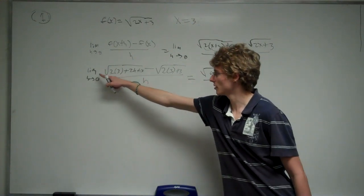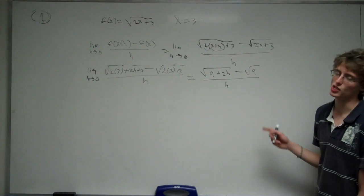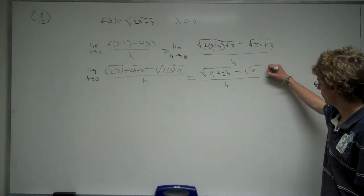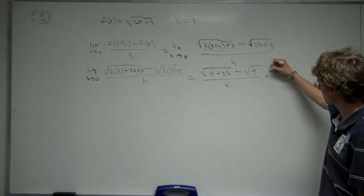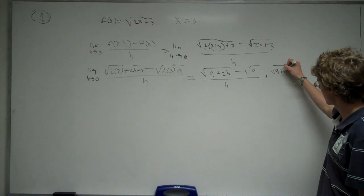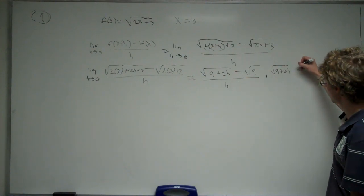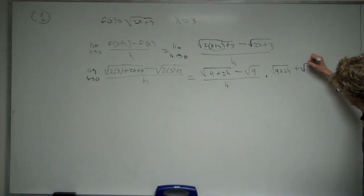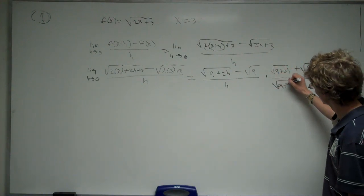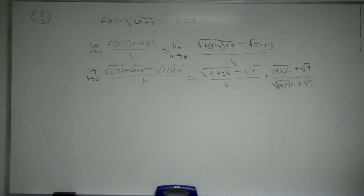And since the limit as h approaches 0 is still undefined in this fraction, we want to try to rewrite it so that it's not undefined. And to do that, we're going to multiply by the conjugate of the top numerator here in an attempt to see if something cancels.